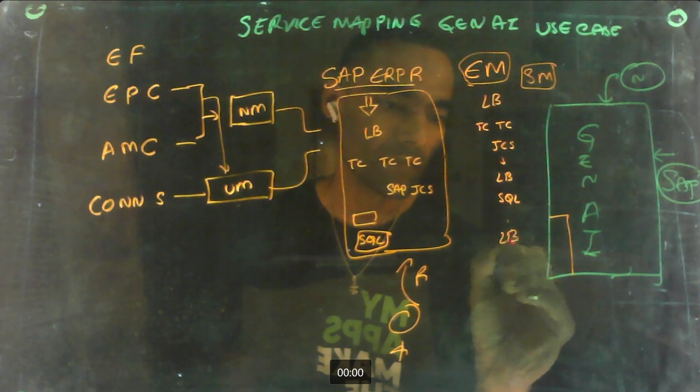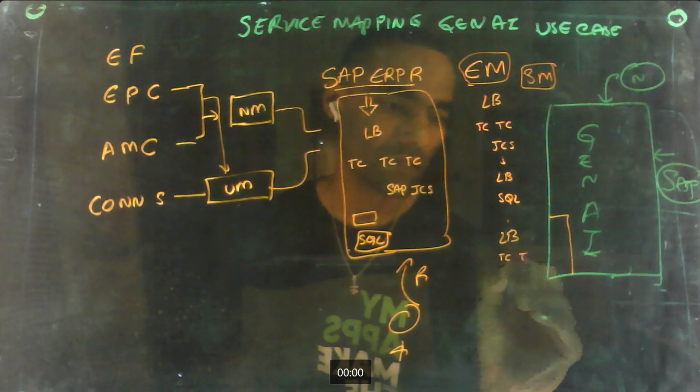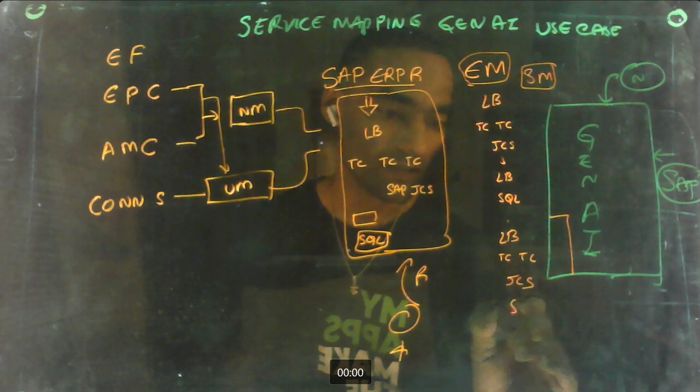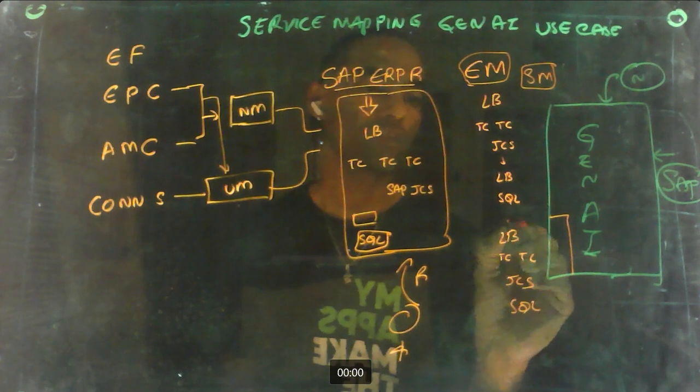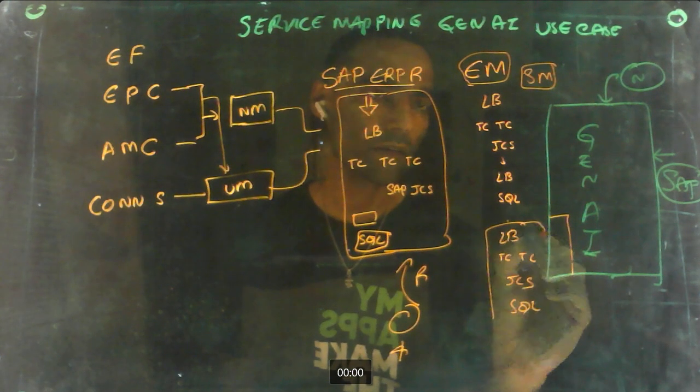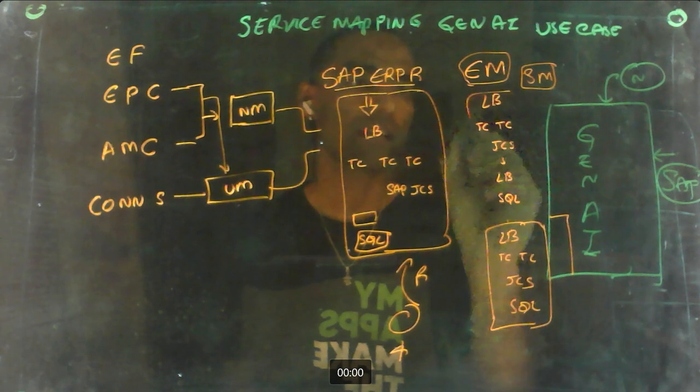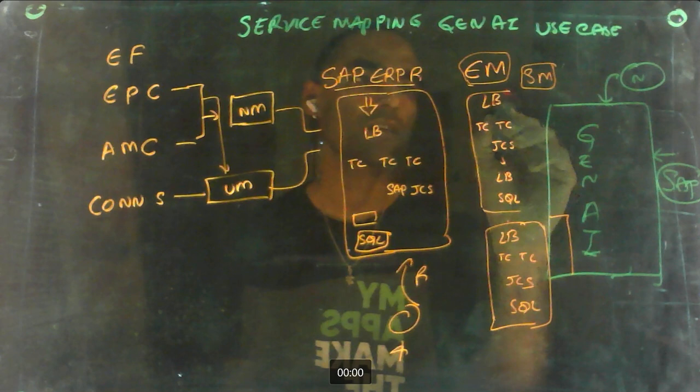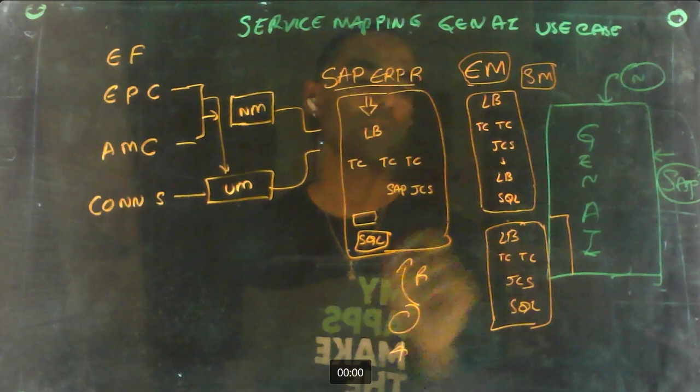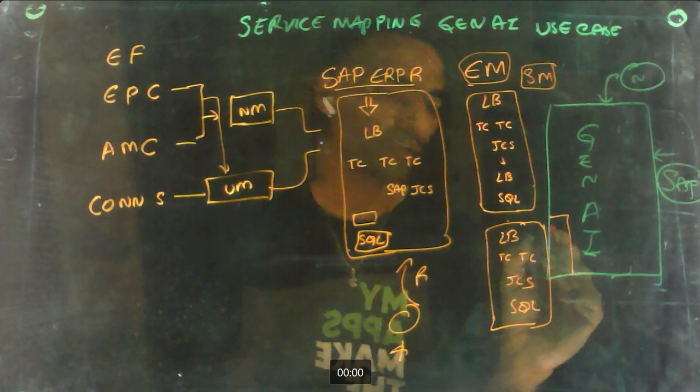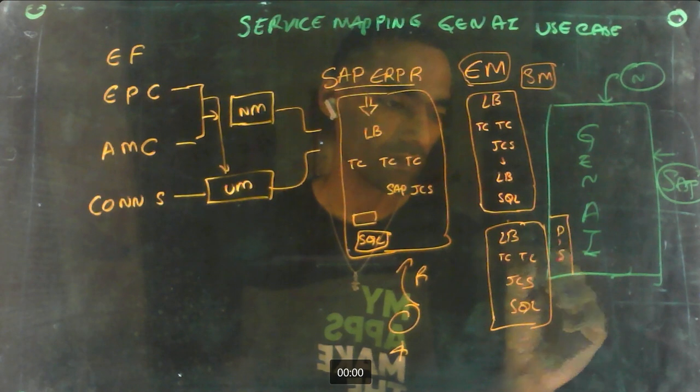So they'll just say there's only an application load balancer, if we say Tomcat and then JCS, and then directly connects to SQL. So now this becomes a specific recommended or expected map for the customer and this is a standard map in any SAP ERP implementation.